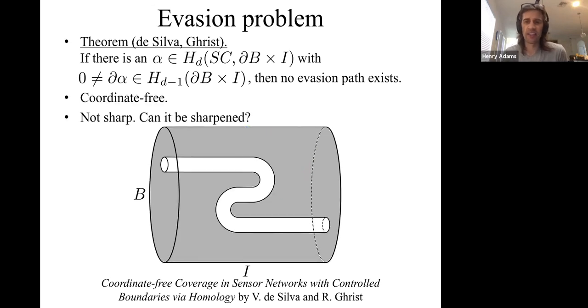Here it is. Here's a picture. Pretend everything is covered by sensors in space across time, except for this S-shaped curve. We can't find a blue sheet alpha in the covered region separating time zero from time one. So there's no blue sheet alpha we can find proving that there's no evasion path.